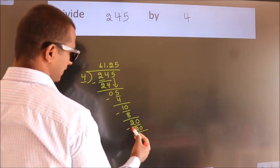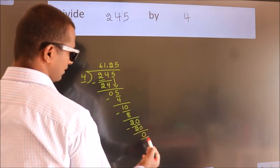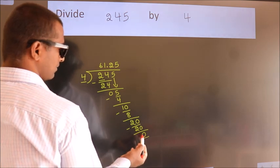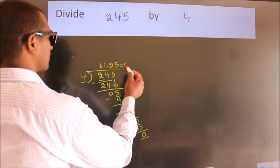Now, we subtract. We get 0. We got remainder 0. So, this is our quotient.